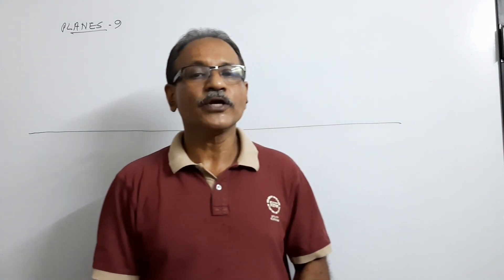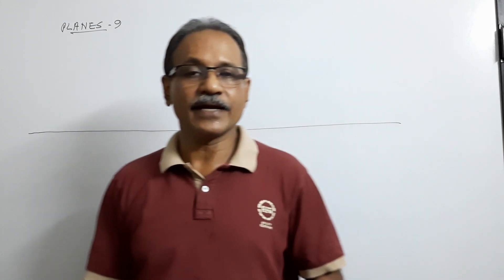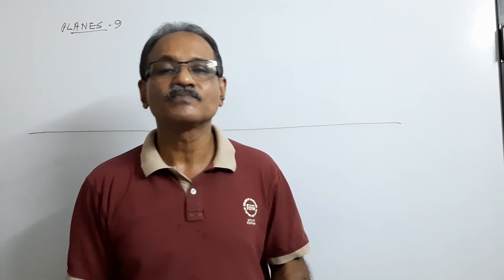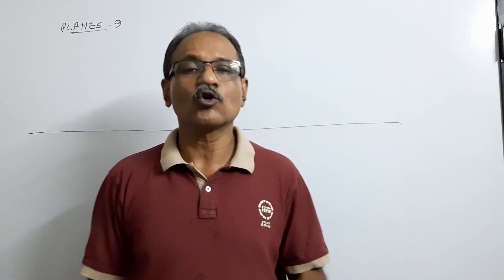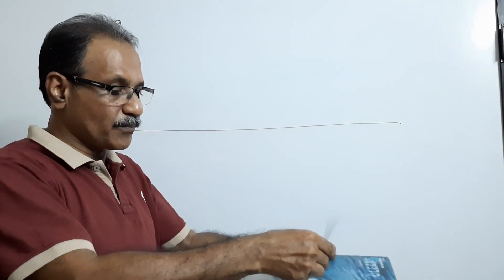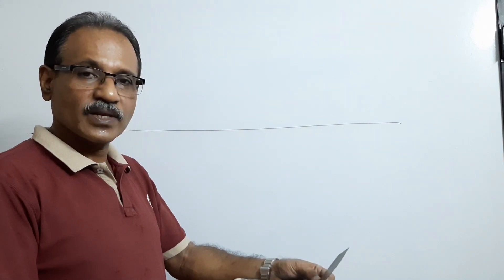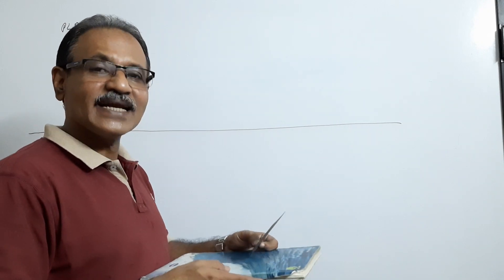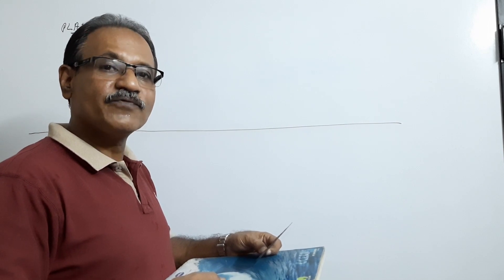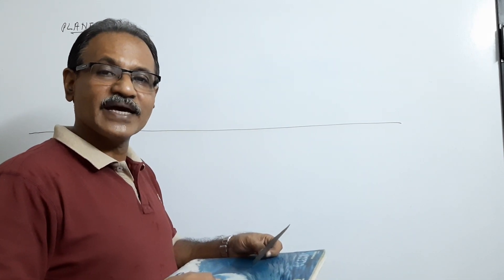Hi students, we are going to video on planes, question 9. The question says: a hexagonal lamina of 30 mm side rests on HP on a corner 'a'. The surface makes some angle to HP, and the diagonal containing 'a' — which is this line shown on the diagram — makes 55 degrees to XY.